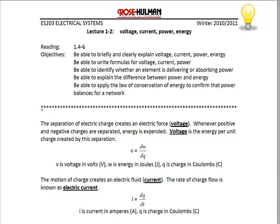At this point, you should have read chapter 1 of the text, which will also discuss some of these concepts. The definition of voltage is that it is the separation of electrical charge, and whenever a positive and negative charge is separated, energy is expended, so voltage is the energy per unit charge created by the separation.